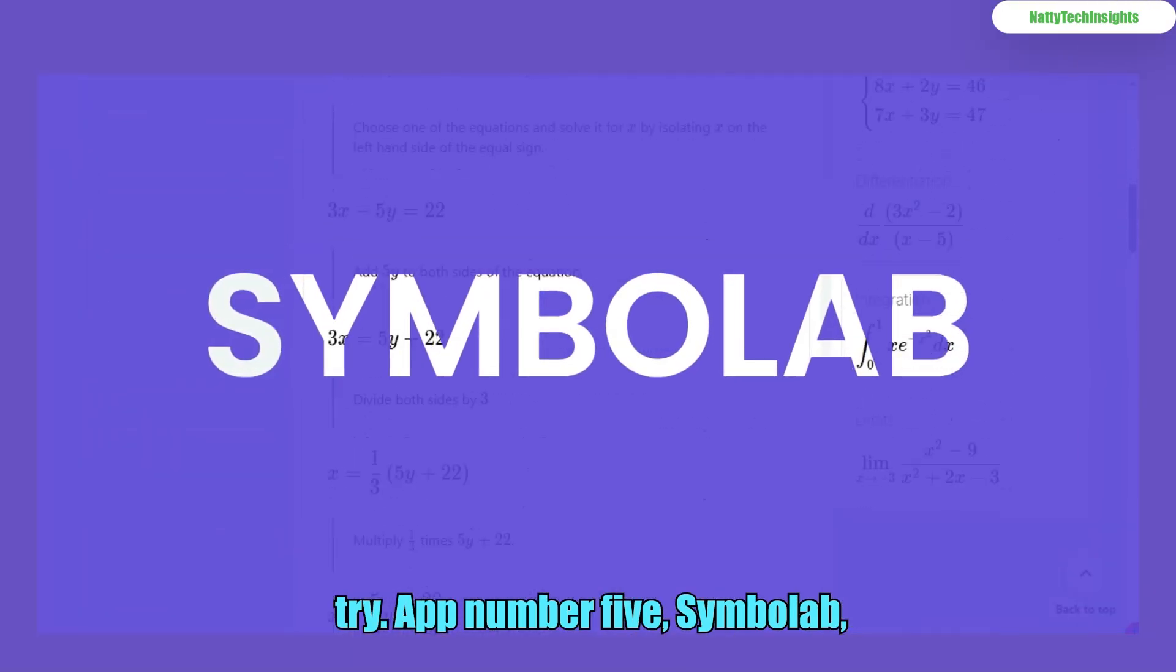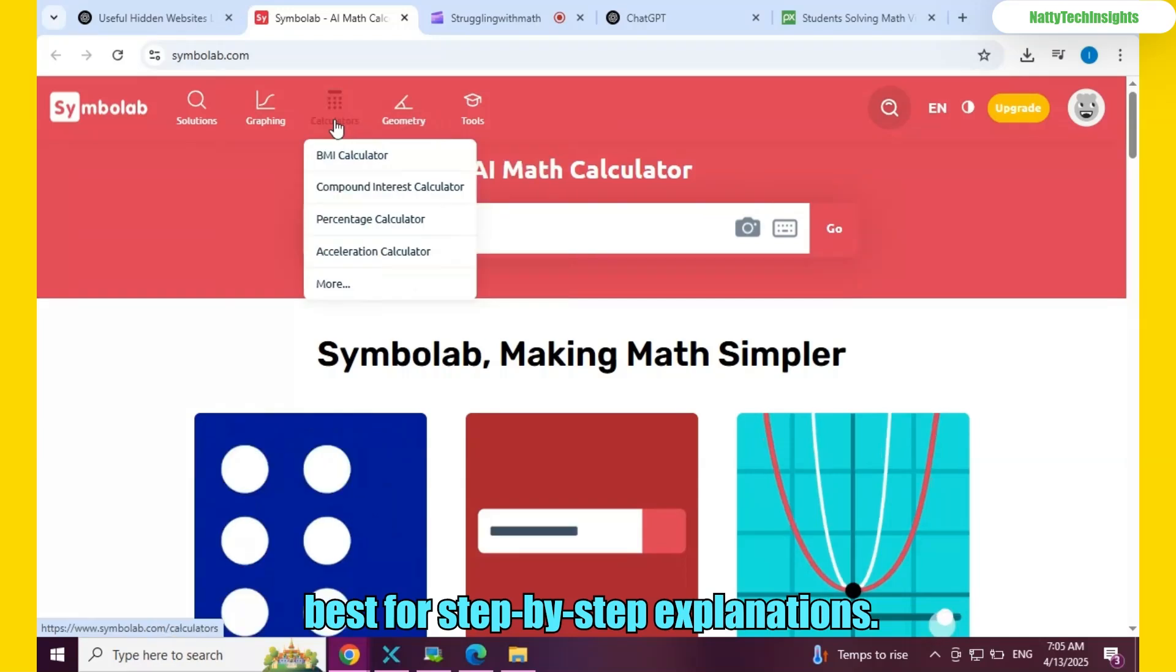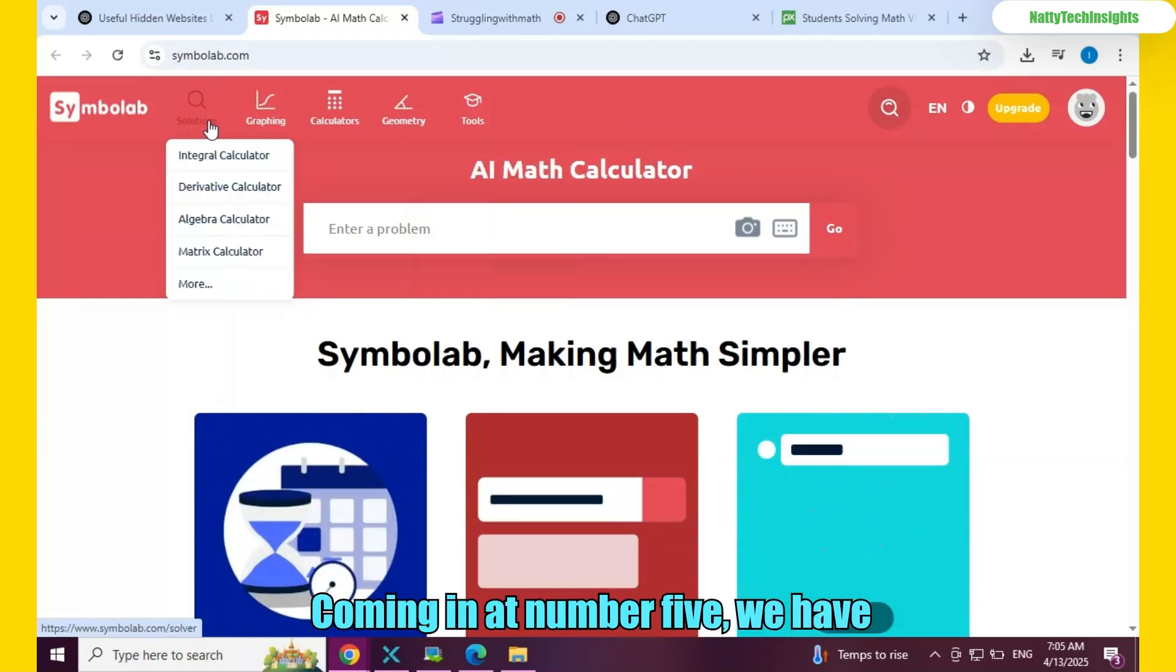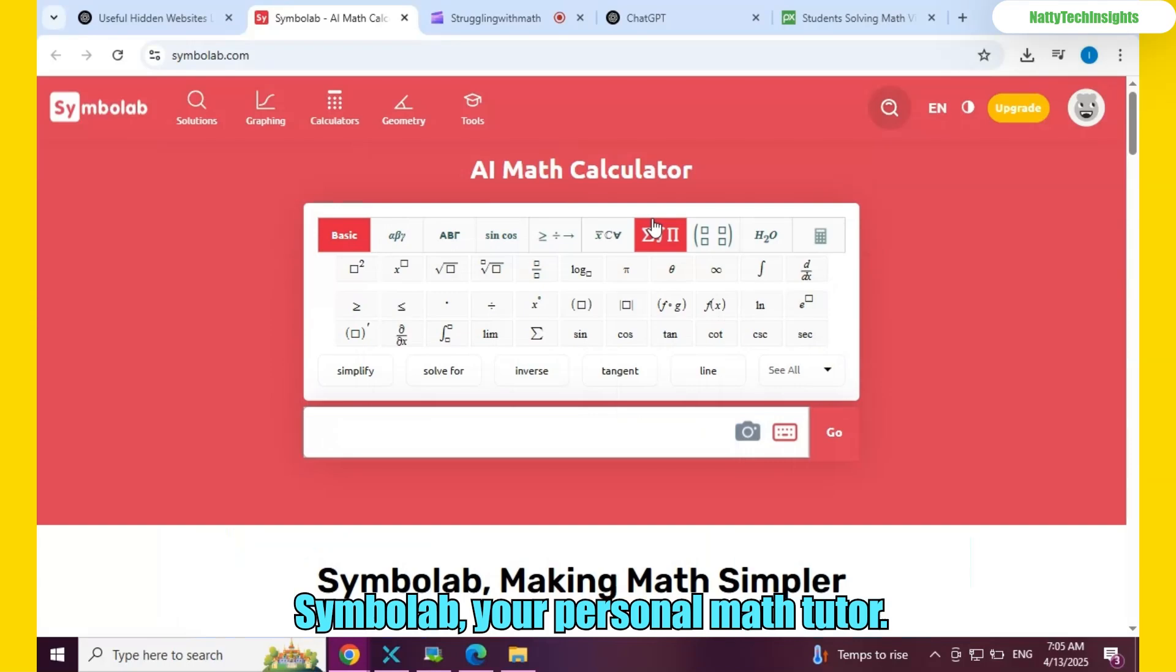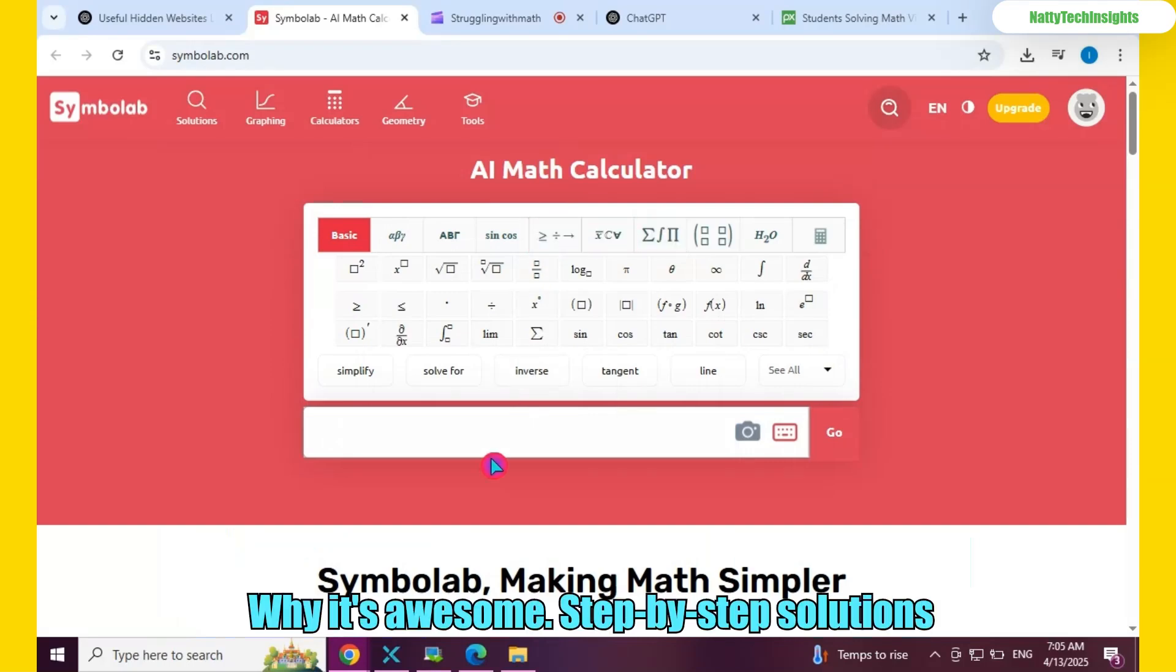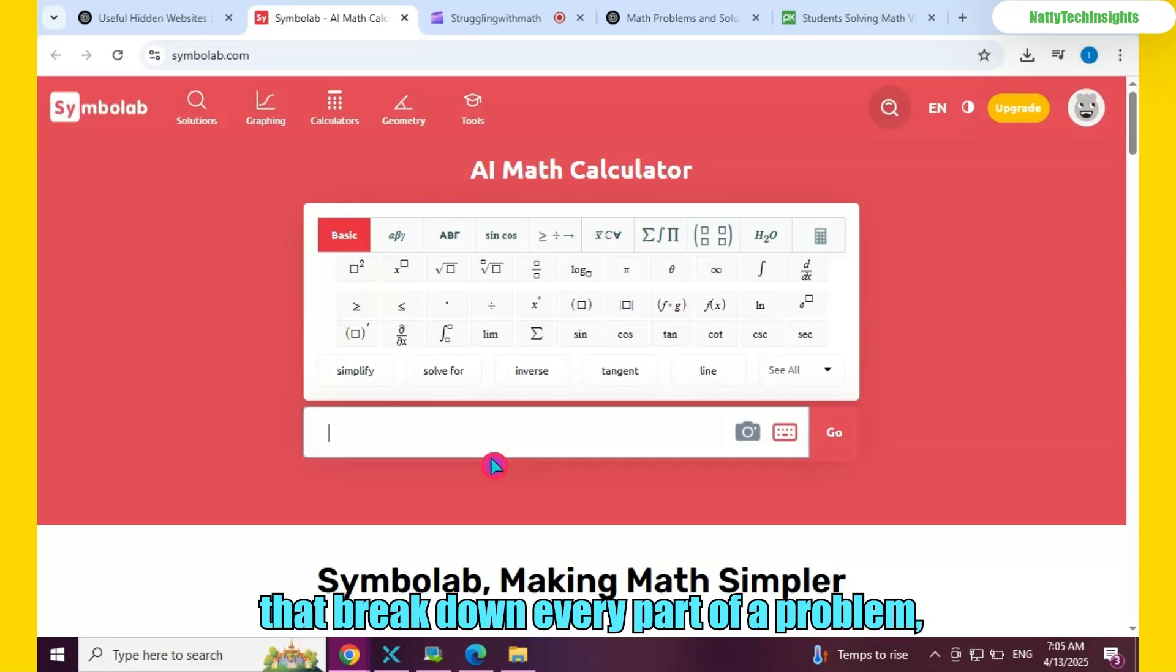App number 5. Symbalab. Best for step-by-step explanations. Coming in at number 5, we have Symbalab. Your personal math tutor. Why it's awesome. Step-by-step solutions that break down every part of a problem.